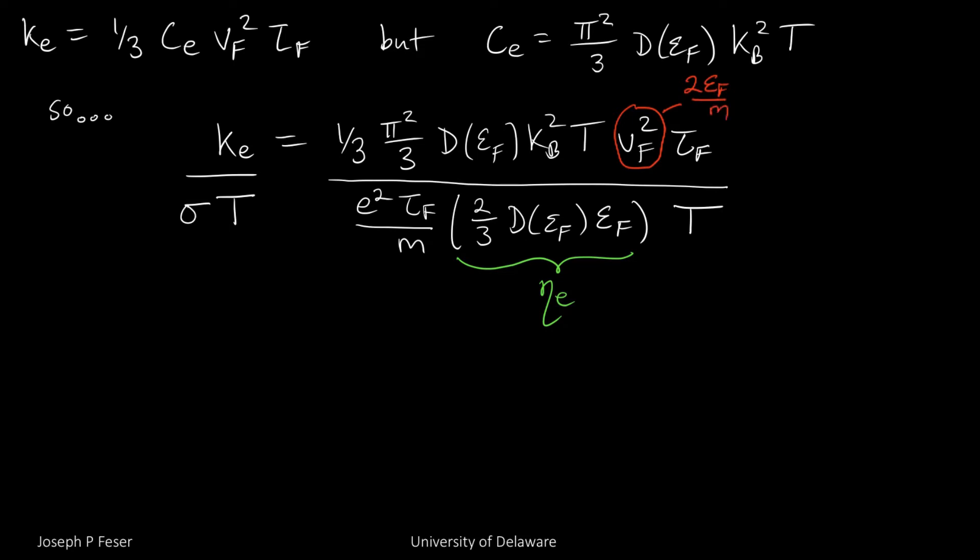I'll make one more substitution, which is that we've shown that the velocity squared is two times E_F over m for a free electron. And then all hell breaks loose.